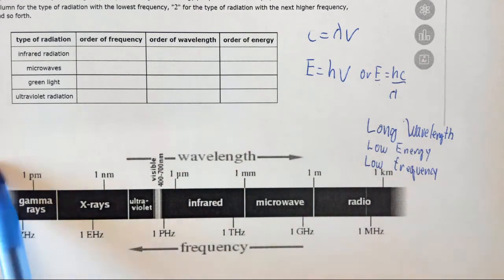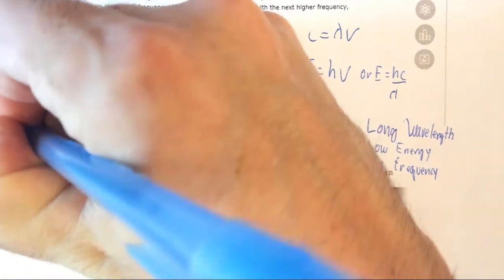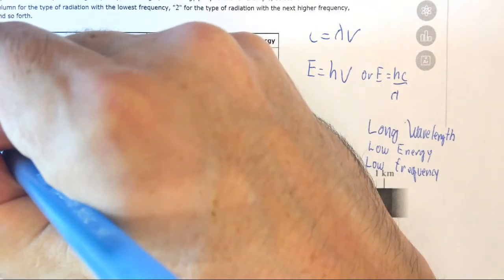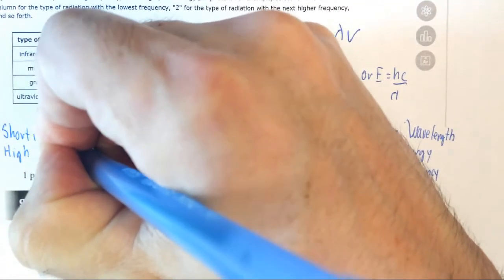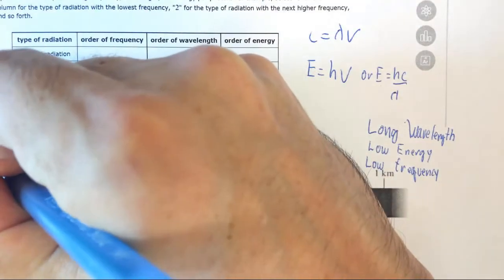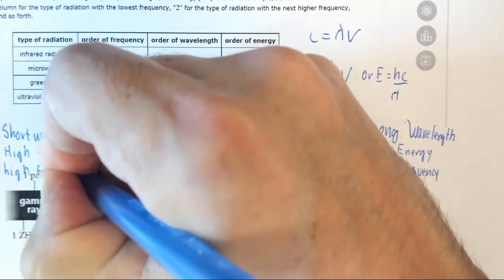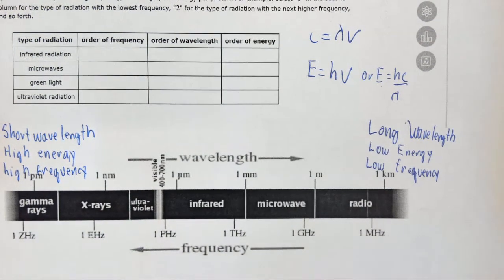The exact opposite is true over here with gamma rays. These are your shortest wavelength, high energy, high frequency waves of electromagnetic radiation. Gamma would be the highest.